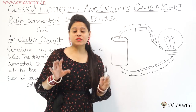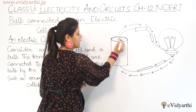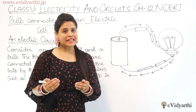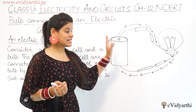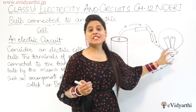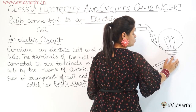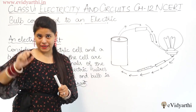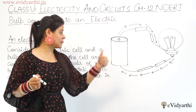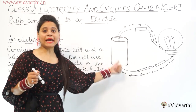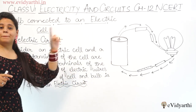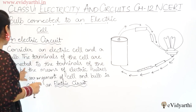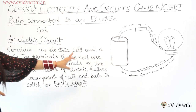First of all, what are the terminals of the bulb? The top portion and the bottom portion. If we study the terminals of the bulb, the metal part has one terminal at the end and one at the top. These two terminals are of the bulb and these two terminals are of the electric cell. When we join the bulb and electric cell, we also join these two terminals by means of electric wires.